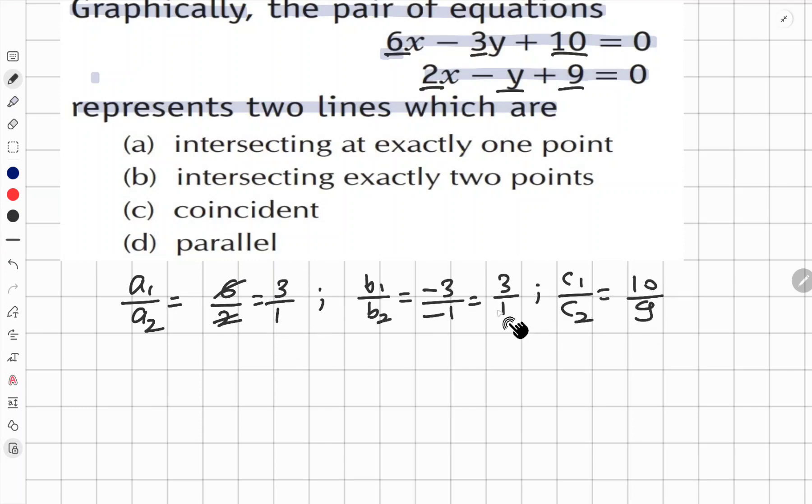Yes, and the third one is not equal. a₁ upon a₂, that is 3 is to 1, is equal to b₁ upon b₂, that is also 3 is to 1, but not equal to c₁ upon c₂.